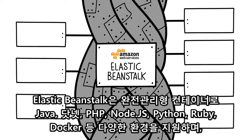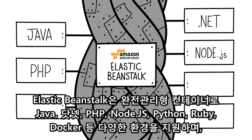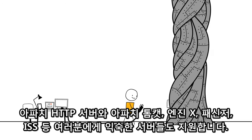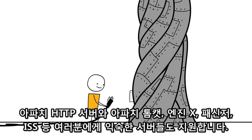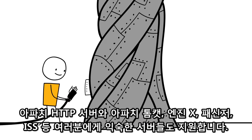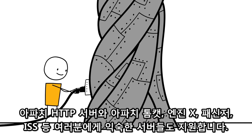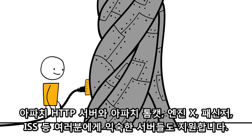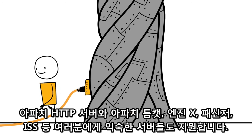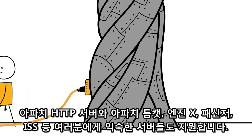Elastic Beanstalk uses managed containers that support environments such as Java, .NET, PHP, Node.js, Python, Ruby, and Docker on familiar servers such as Apache HTTP Server, Apache Tomcat, NGINX, Passenger, and IIS.